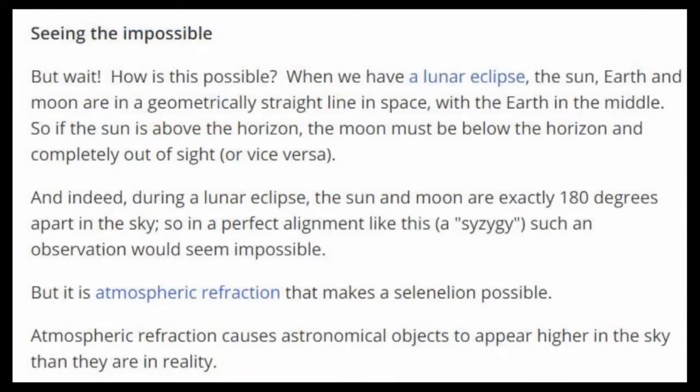When we have a lunar eclipse, the sun, earth and moon are in a geometrically straight line in space with earth in the middle. So if the sun is above the horizon, the moon must be below the horizon and completely out of sight, or vice versa.